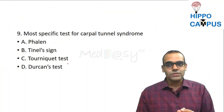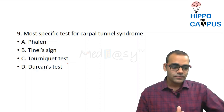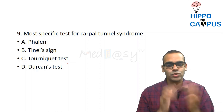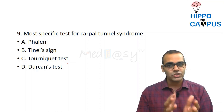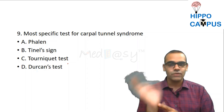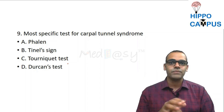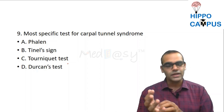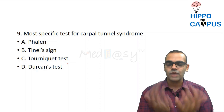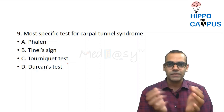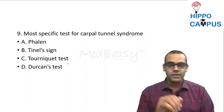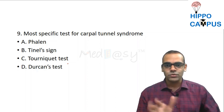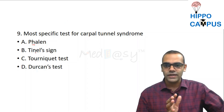Question 9: The most specific test for carpal tunnel syndrome. Carpal tunnel syndrome is the most common compressive neuropathy of the median nerve — compression at the level of the flexor retinaculum. The causes include increased contents of the carpal tunnel or decreased space. The tests given as options are Phalen's test, Tinel's sign, tourniquet test, and Durkan's test.